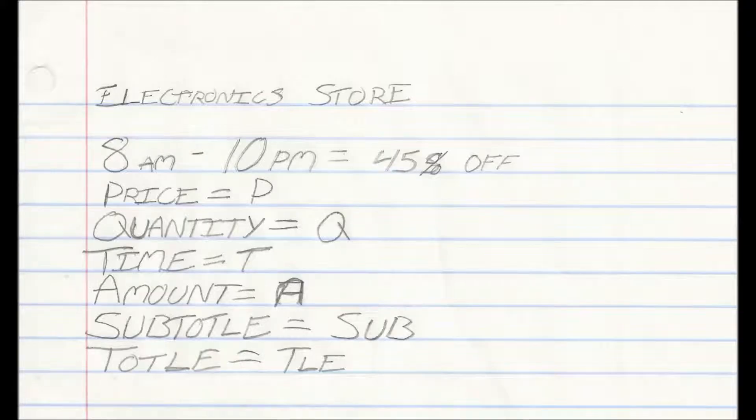The variables: P, Q, T, A, SubTotal. I spelled that wrong, I'm sorry. Start. Time, discount, price, quantity.